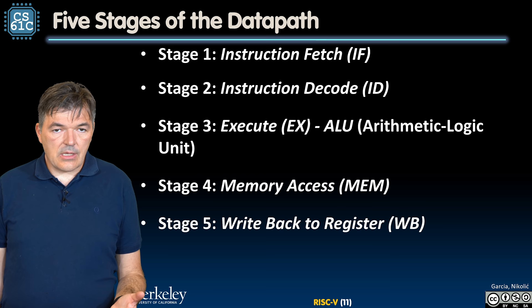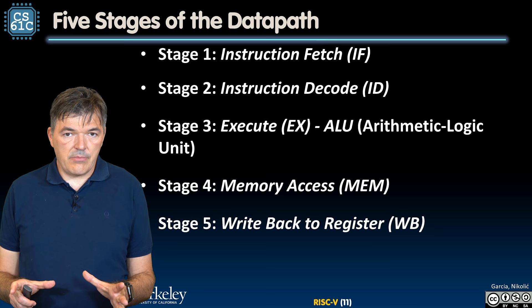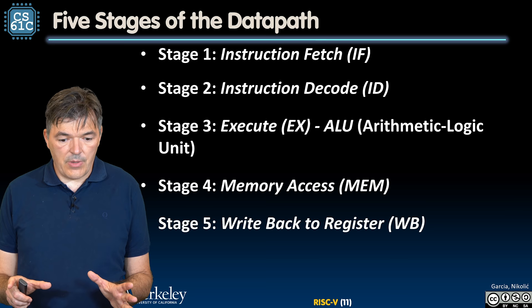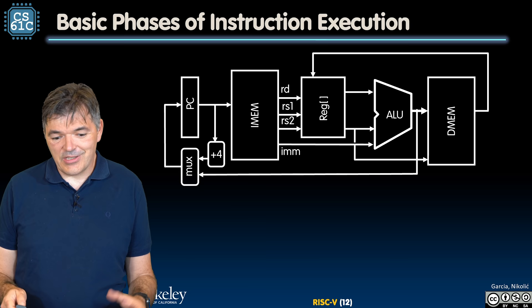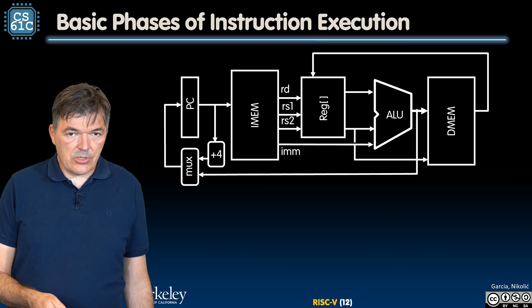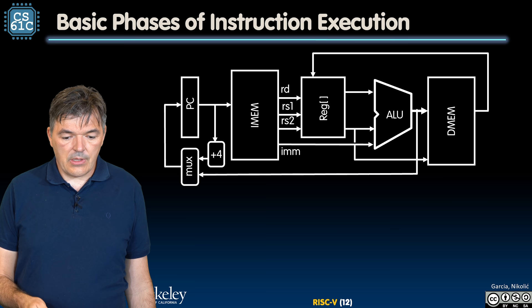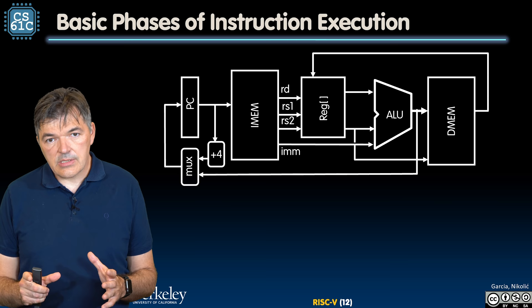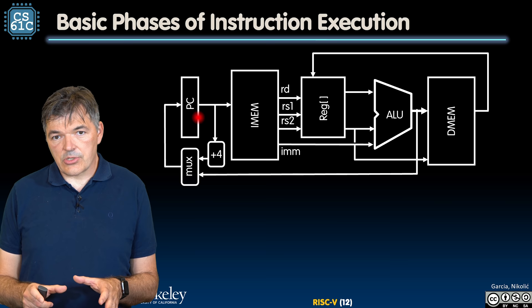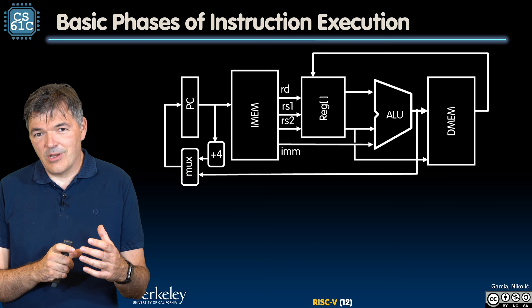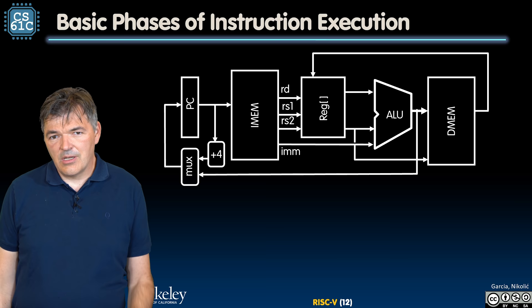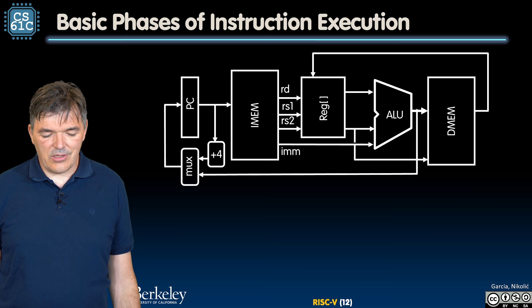Let's take a look at how this looks schematically. Here is a diagram of a data path for a processor — a very generic data path. Arranged are elements we have seen before but not yet connected in a particular way. In the first stage we have a program counter, then instruction memory, a register file, an ALU, and data memory. We are assuming two separate memories — instruction memory and data memory — although they are part of one physical memory. We treat the part containing instructions separately from the part containing data.